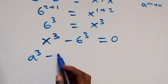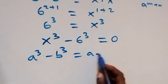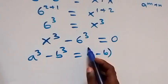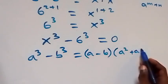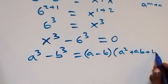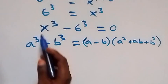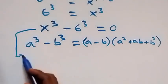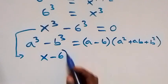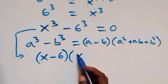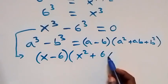This follows the difference of cubes formula: a³ minus b³ equals (a minus b)(a² plus ab plus b²). We apply this factoring identity to our expression.